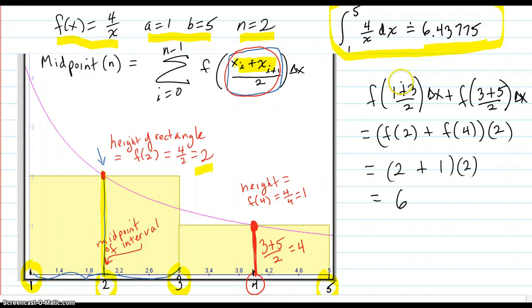So we work that out over here. F at the midpoint of the first sub-interval, f at the midpoint of the second sub-interval. Figures out to this, computes to simplify down to that, and it comes out to be 6.